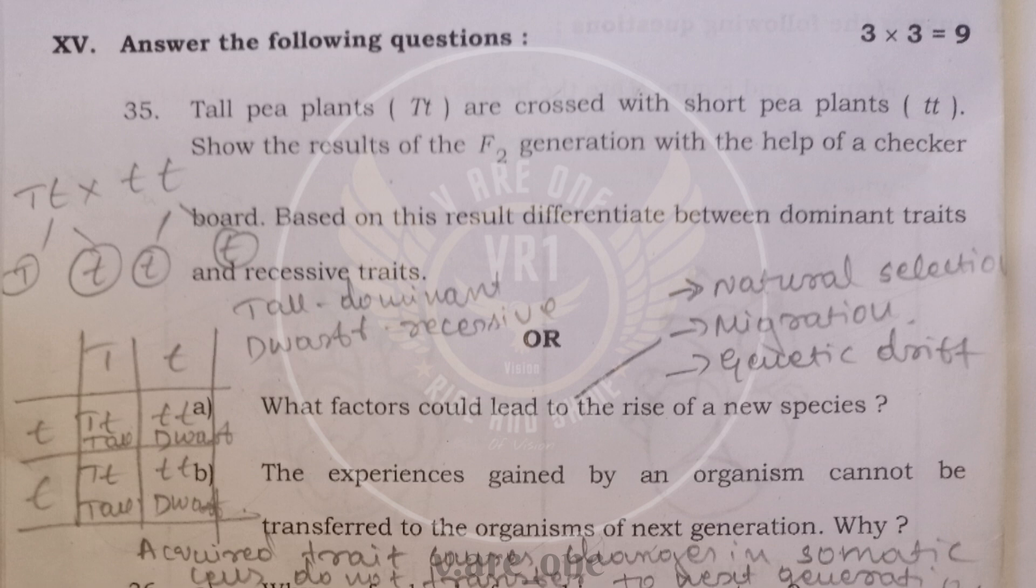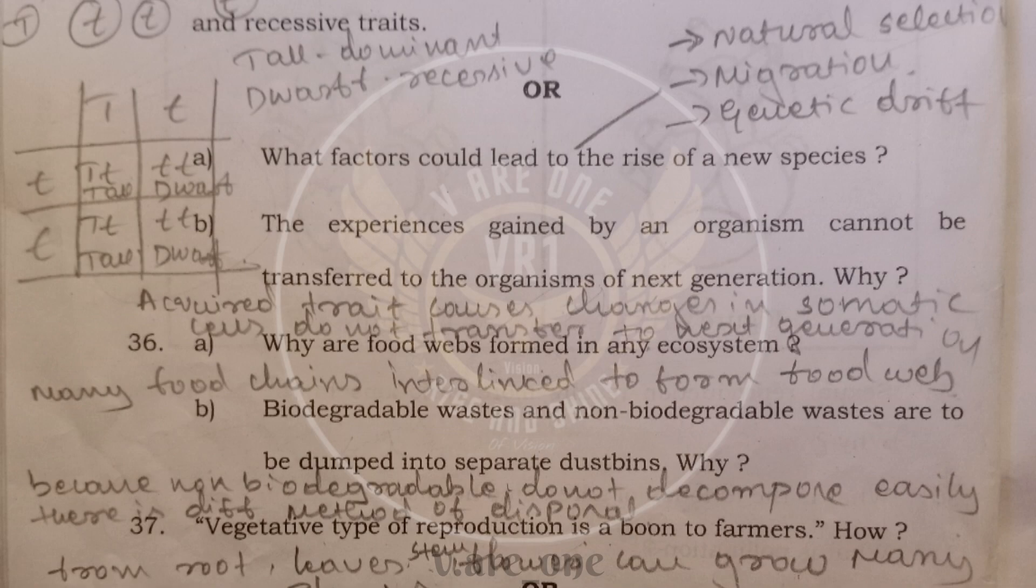Next, we have option for this question. And option is, what factors could lead to the rise of new species? First one, natural selection, then migration and genetic drift. The experiences gained by an organism cannot be transferred to the organism of next generation. The experience gained by an organism, these are examples for the acquired traits. And these traits cause changes in the body cells. And they do not transfer from one generation to next generation. The changes which occur only in reproductive cells can carry from one generation to another generation.